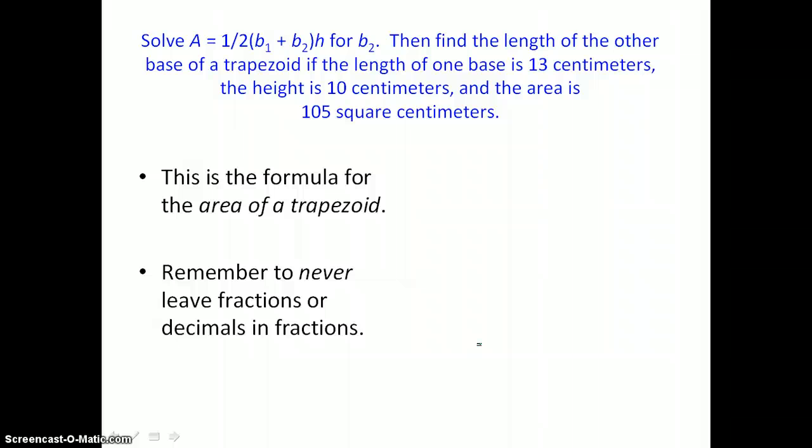In the next example, we want to solve A equals 1/2 the quantity b₁ plus b₂ times h for b₂. Then find the length of the other base of a trapezoid if the length of one base is 13 centimeters, the height is 10 centimeters, and the area is 105 square centimeters. This happens to be the formula for the area of a trapezoid, and we want to isolate b₂ in this formula.